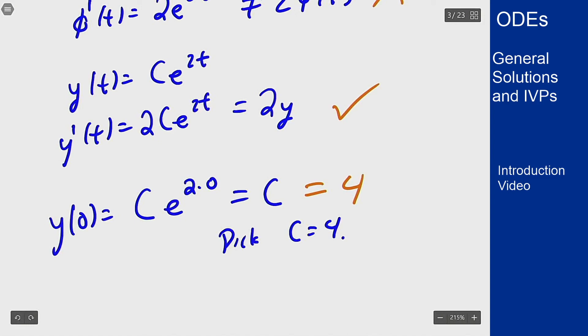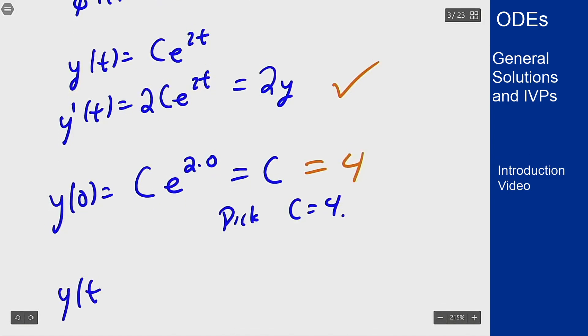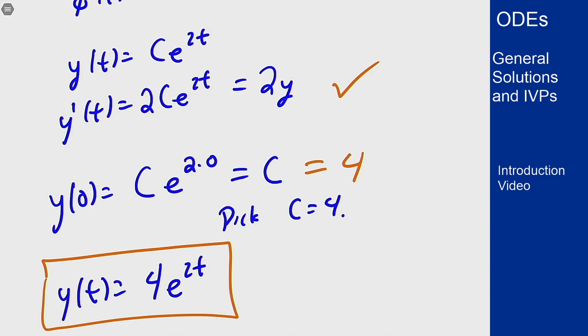Thus the solution here is going to be y(t) = 4e^(2t) which will solve the differential equation and the right initial condition to solve the initial value problem. So that's how you have a general solution of an IVP and how you would go about verifying and picking c to meet the right initial condition that you have for your given problem.